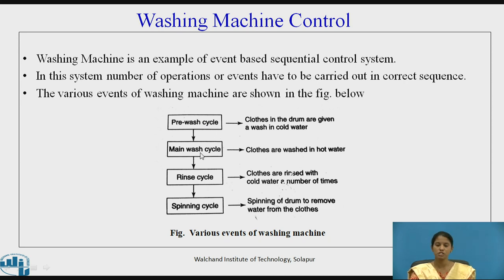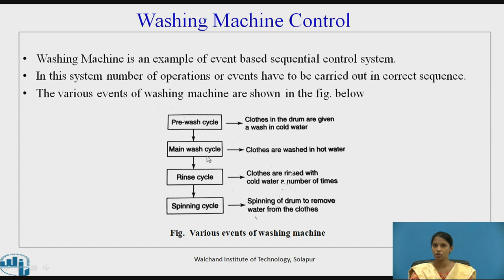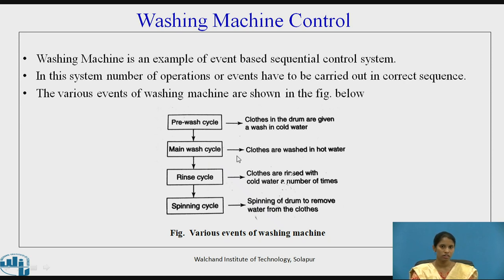The second step is the main wash cycle, in which clothes are washed in hot water. First, the inlet valve is opened to let water in. When water reaches the required level, the inlet is closed by a sensor. Once the inlet valve is closed, the heater starts to heat the water in the drum. When the water temperature reaches the preset value, the heater turns off, the sensor detects the temperature, the drum starts rotating, and the wash cycle is completed.